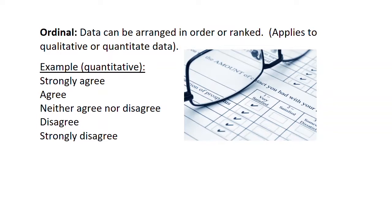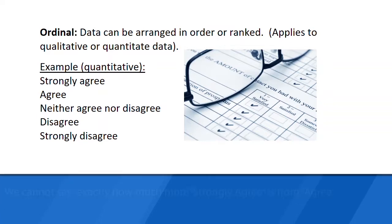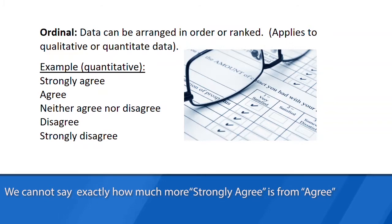Now let's consider a quantitative example of ordinal data. What you're seeing there is called a Likert scale. When somebody takes a survey, you might be asked: do you strongly agree, agree, are neutral, disagree, or strongly disagree? You can certainly rank these responses, but you couldn't say how much more 'strongly agree' is than just 'agree' or 'neither agree nor disagree' in terms of a number.